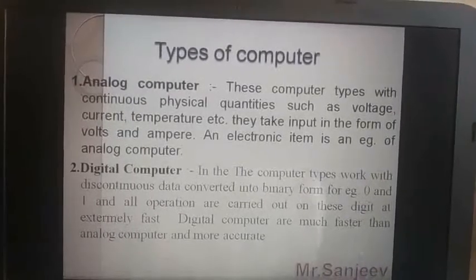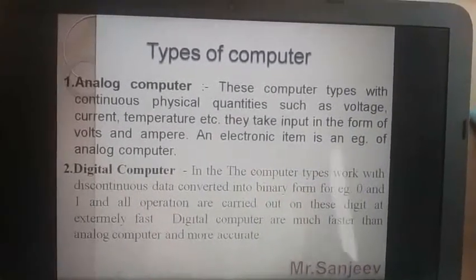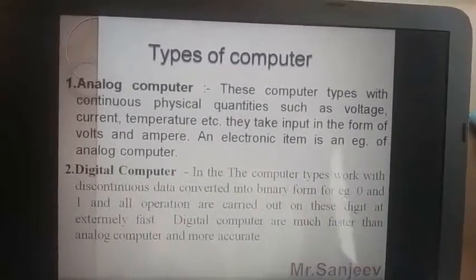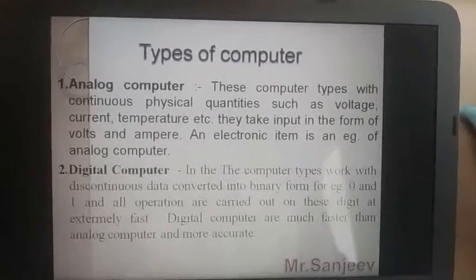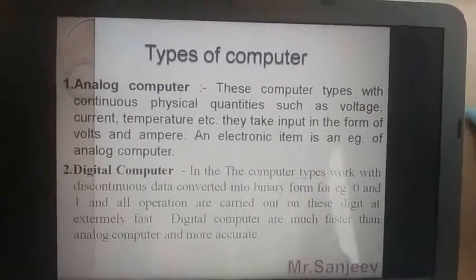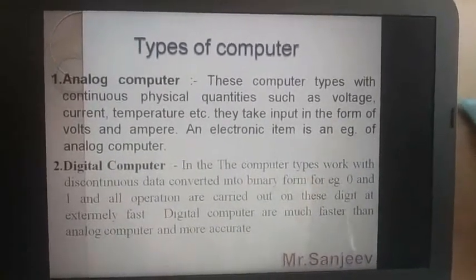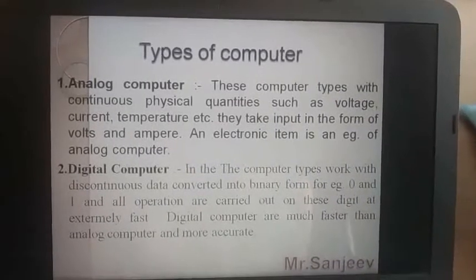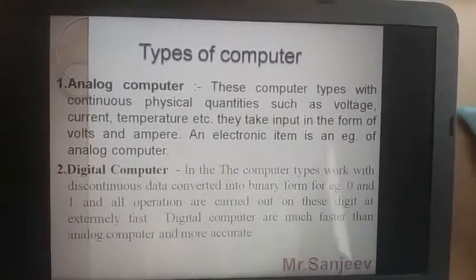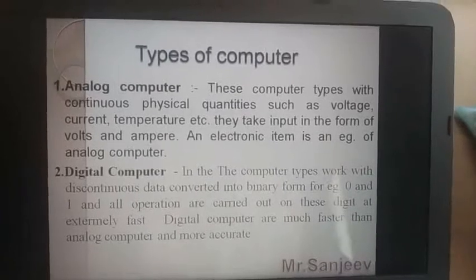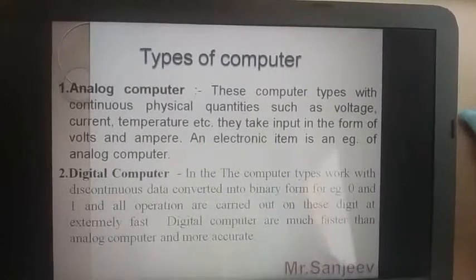Binary form کو represent کرتے ہیں electric pulse کے اندر، یعنی switches کے اندر — جب ہم switch کو down کریں تو switch on ہو جاتا ہے، اور on کو represent کرتا ہے 1 نے۔ جب switch کو off کریں تو off is equal to 0 — یعنی 0 is equal to false اور 1 is equal to true۔ یہاں binary number کا rule implement ہوا جس میں صرف 0 and 1 digits کا use کیا گیا۔ Digital computers are much faster than analog computers and more accurate.